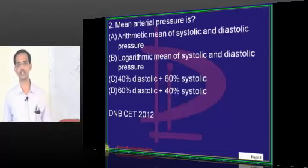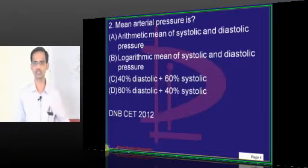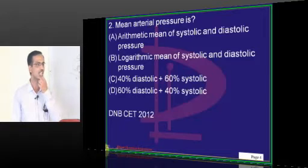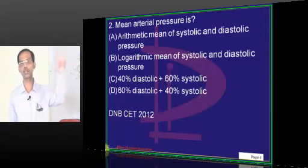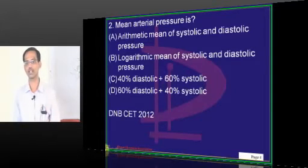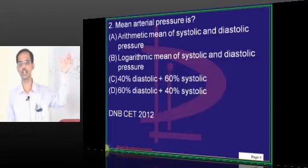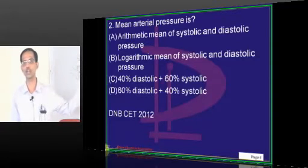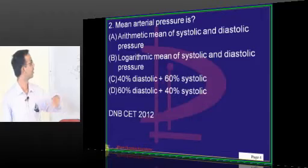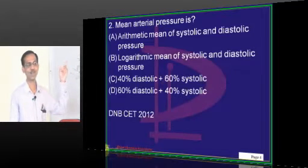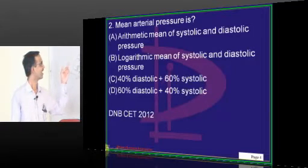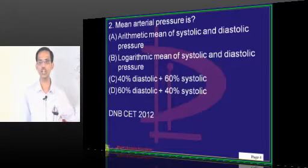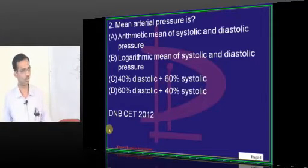Mean arterial pressure — how do we calculate mean? Mean is not exactly systolic plus diastolic divided by 2. Because the duration of diastole is more, more weightage has to be given to diastole and less weightage to systole. Looking at the options, more weightage to diastole is given in option D: 60% diastole, 40% systole.